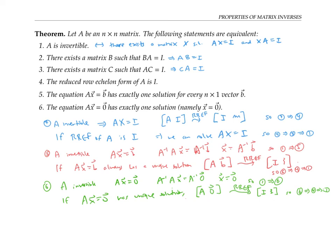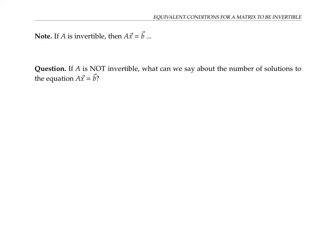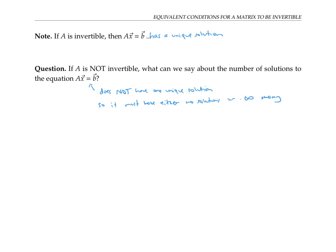So all of these conditions are equivalent. We've seen that if A is invertible, Ax equals B has a unique solution for any vector B. But what if A is not invertible? We know this equation cannot have one unique solution — if it did, A would reduce to the identity and be invertible. So it must have either no solutions or infinitely many, since those are the only three possible options for a system of linear equations: one unique solution, no solutions, or infinitely many solutions.